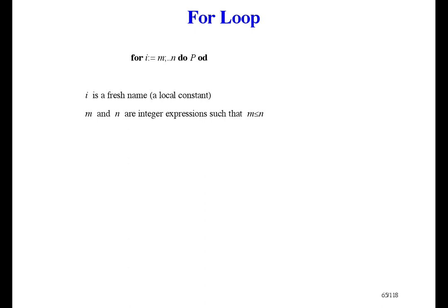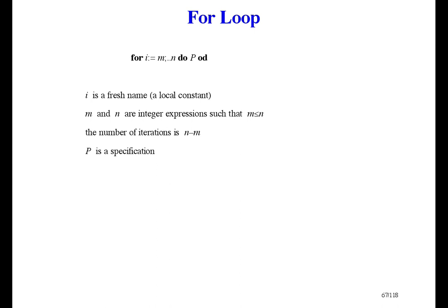The for loop is a kind of loop construct in some popular programming languages. The syntax I'm going to use looks like this. The name is treated as a state constant, not a variable — you can't assign to it inside the loop body. M and N are integer expressions such that M is less than or equal to N, and it's their initial values that control the iteration. I starts at M and goes up to, but not including, N. So the number of iterations is N minus M. The body P doesn't have to be a program — it can be a specification that still has to be refined. As with all other loop constructs, we don't have a direct meaning for the for loop. We have a rule for using it in a refinement.